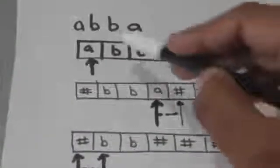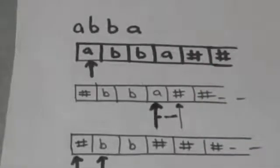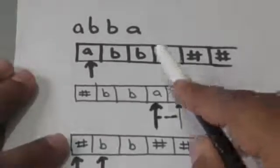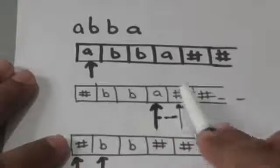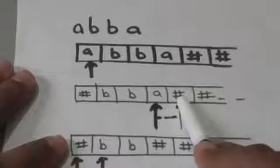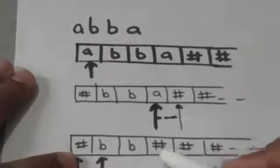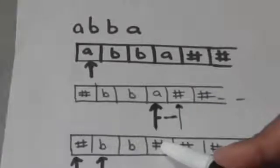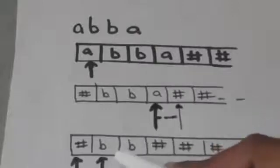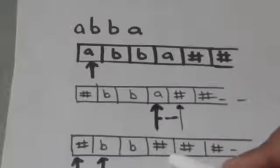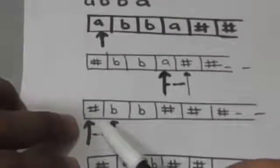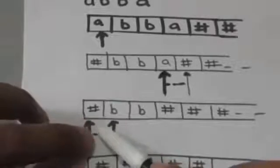If they are not the same, the Turing machine will crash. Now, to reach the last symbol of the string, the Turing machine will first find the first blank symbol to the right of the current head position, and then move its head one position to the left.